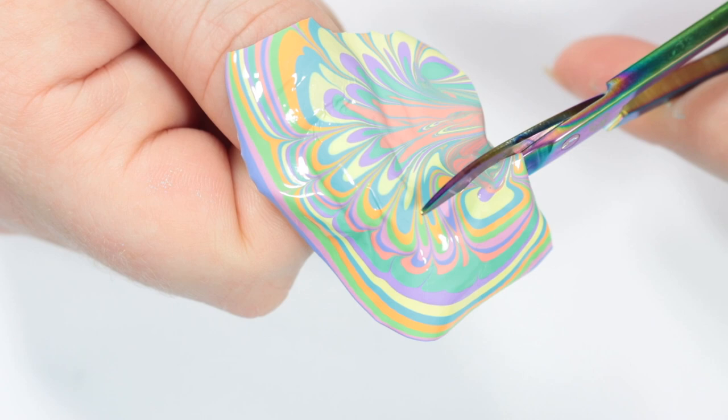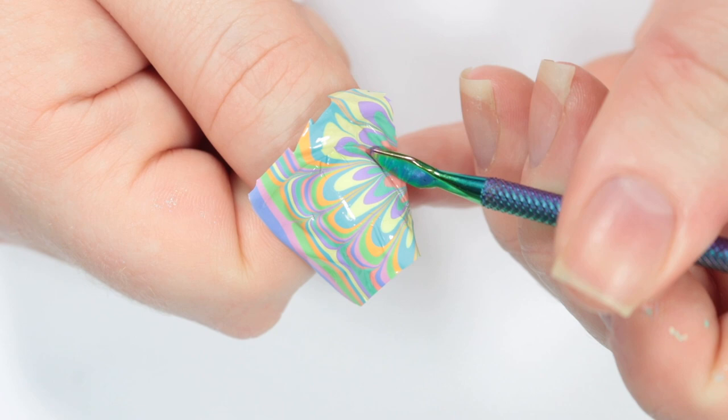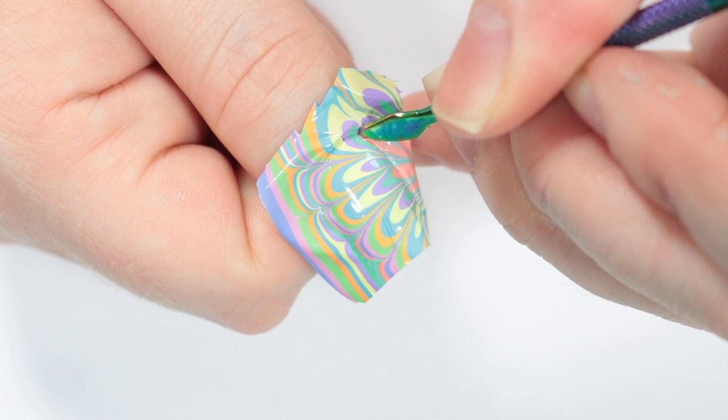While my nail was still tacky, I placed the part of the water marble down onto my nail, pressing it firmly. Then I took the scissors again and trimmed off any big pieces that I wouldn't need. Then with this little cuticle pusher tool, I went around the edge of my cuticle and just really pressed the marble into the edge of my cuticles so I would have a clean line and it would easily break off the rest of this nail polish sheet.